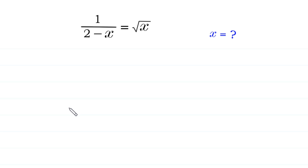Hello, welcome to how to solve this very nice equation. 1 over 2 minus x is equal to square root of x, and we need to find all possible values of x.